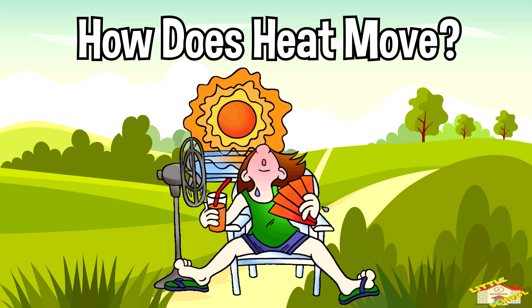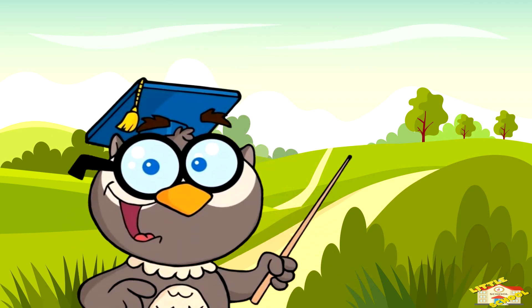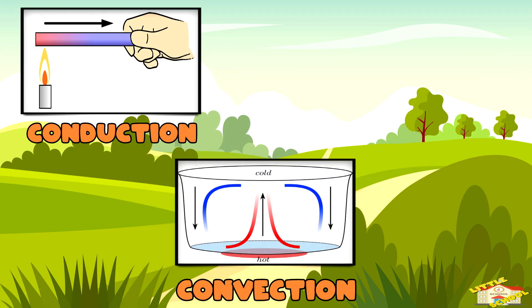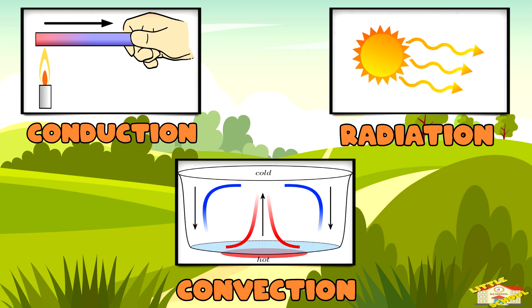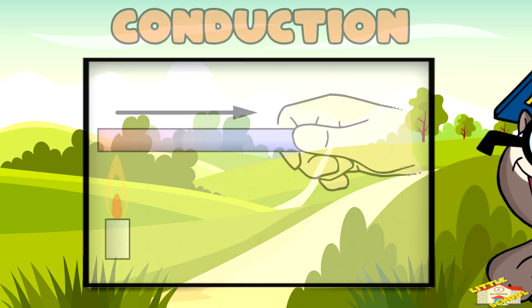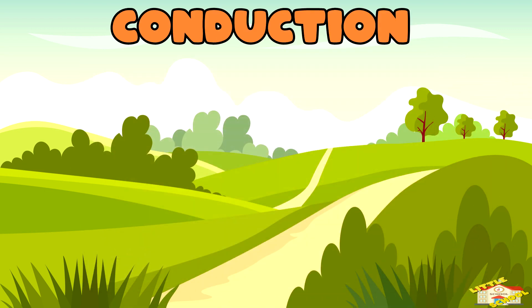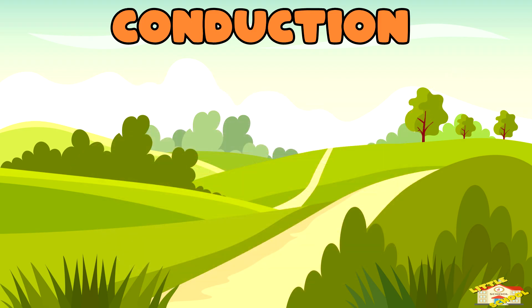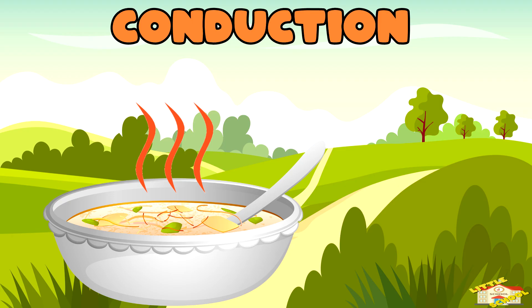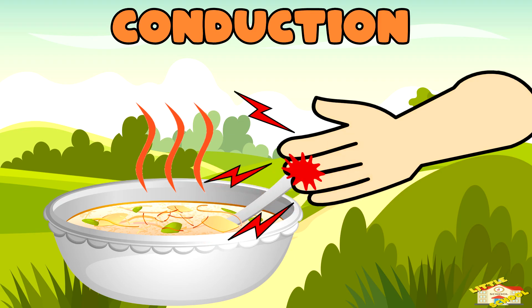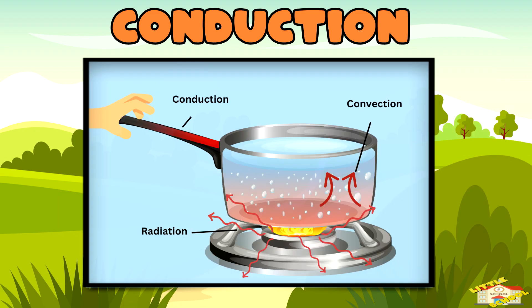How does heat move? Heat can move in three different ways: conduction, convection, and radiation. Let's break them down. Conduction happens when heat moves through things that are touching each other. Imagine holding one end of a metal spoon while the other end is in hot soup. Soon your hand feels warm because the heat travels through the spoon to your hand — that's conduction.